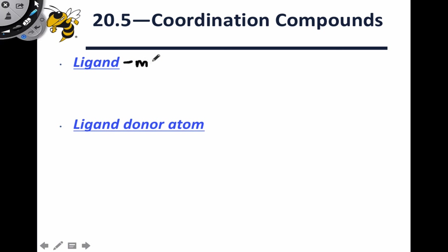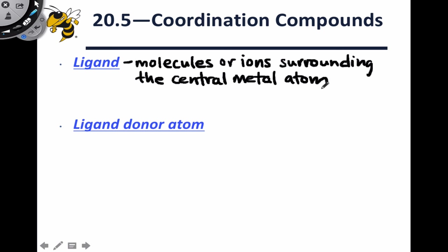The molecules or ions that surround the central metal atom are known as ligands. And ligands are usually small or moderately sized organic molecules. Not all of the atoms within the ligands are actually bonded to the metal. We define the specific atom that donates a lone pair in a coordination compound as the ligand donor atom.